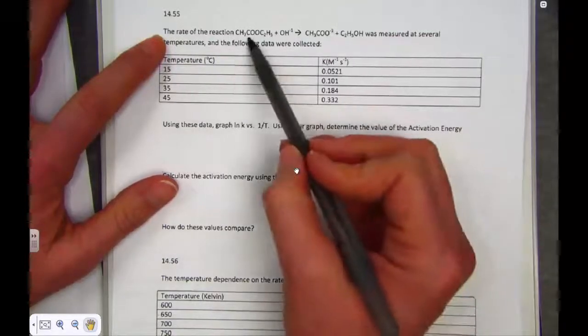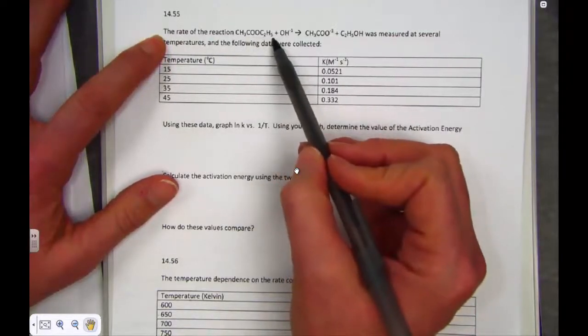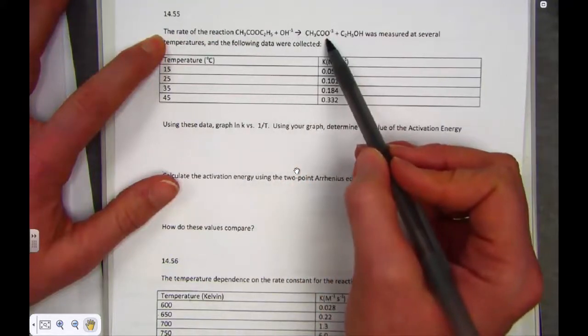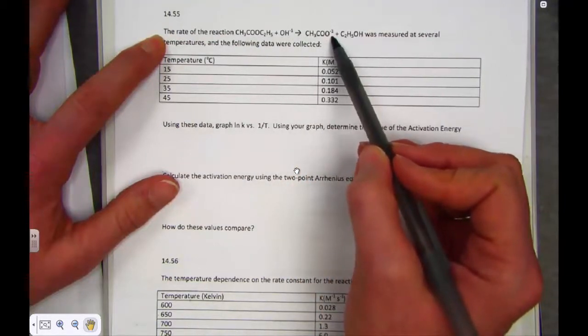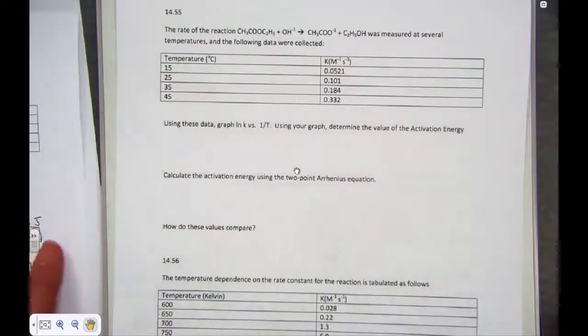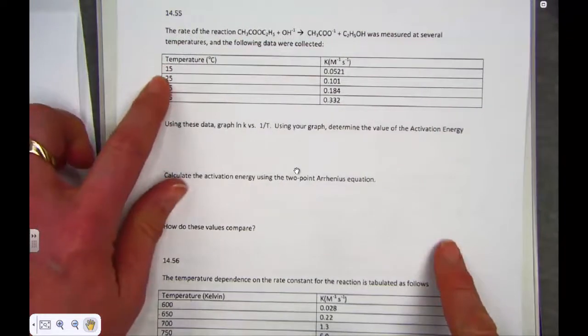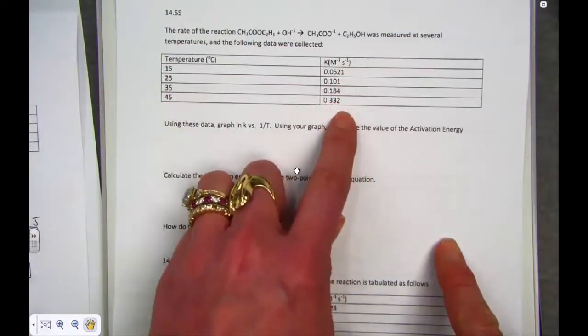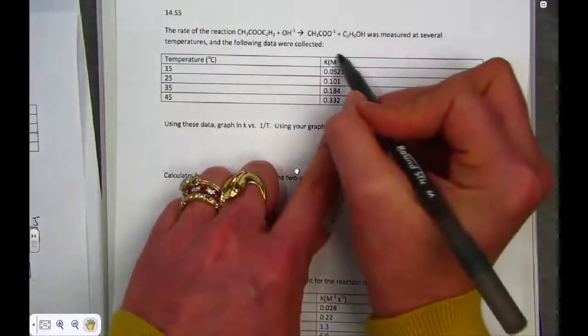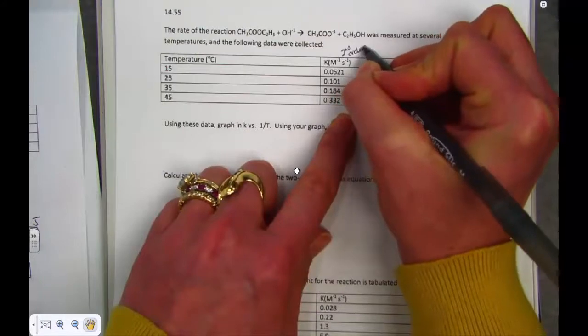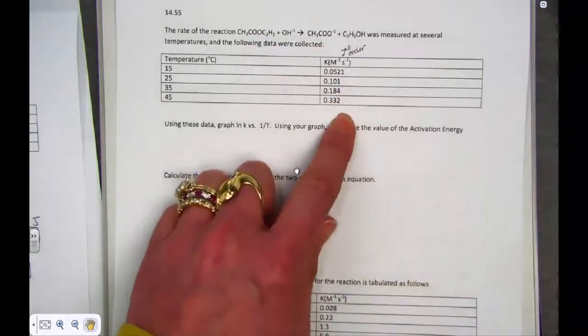Here we have a reaction, CH3COOC2H5 with hydroxide. We see a substitution, CH3COO now is a negative one charge, and we've made ethanol, C2H5OH. We've got temperature generated for several different trials, and we've got K constants generated at seven different trials. I can tell by the K constant that this must be a second order reaction.